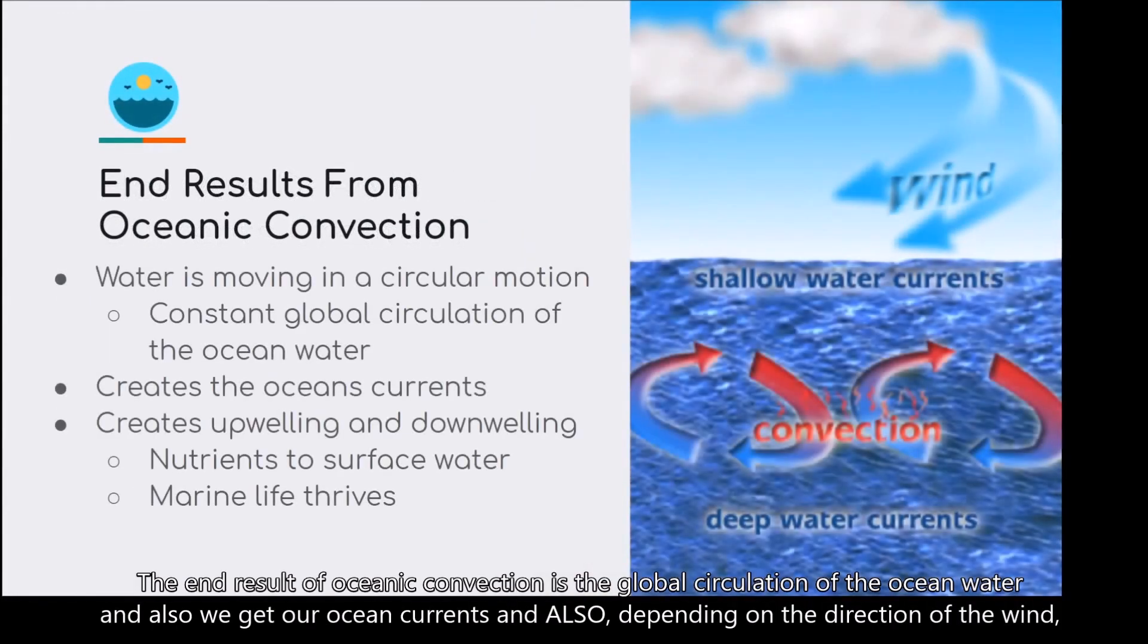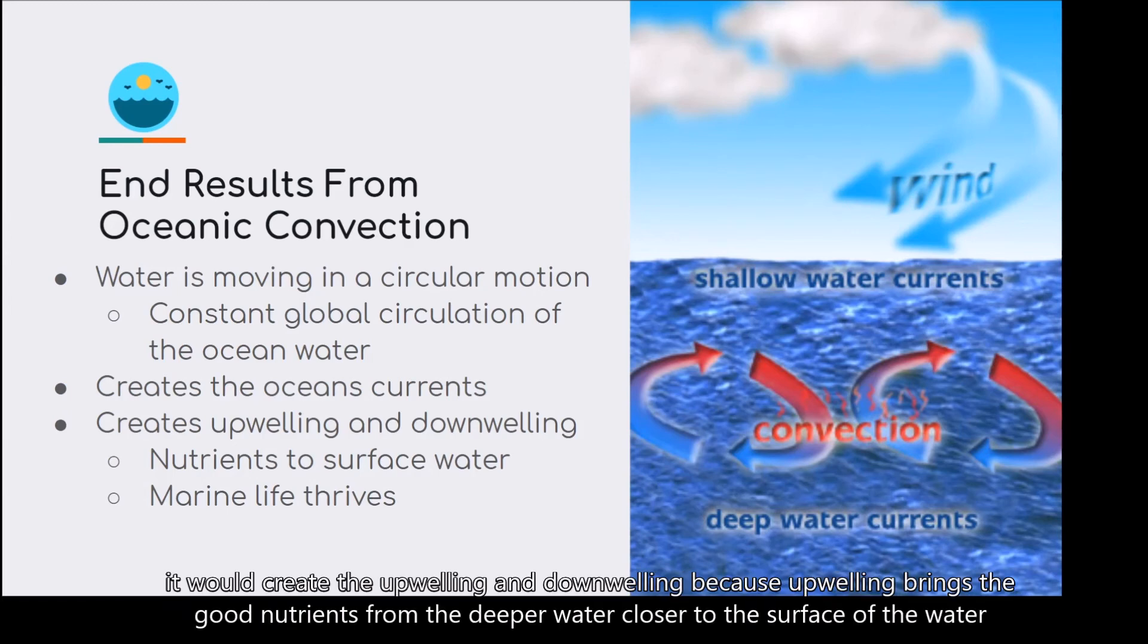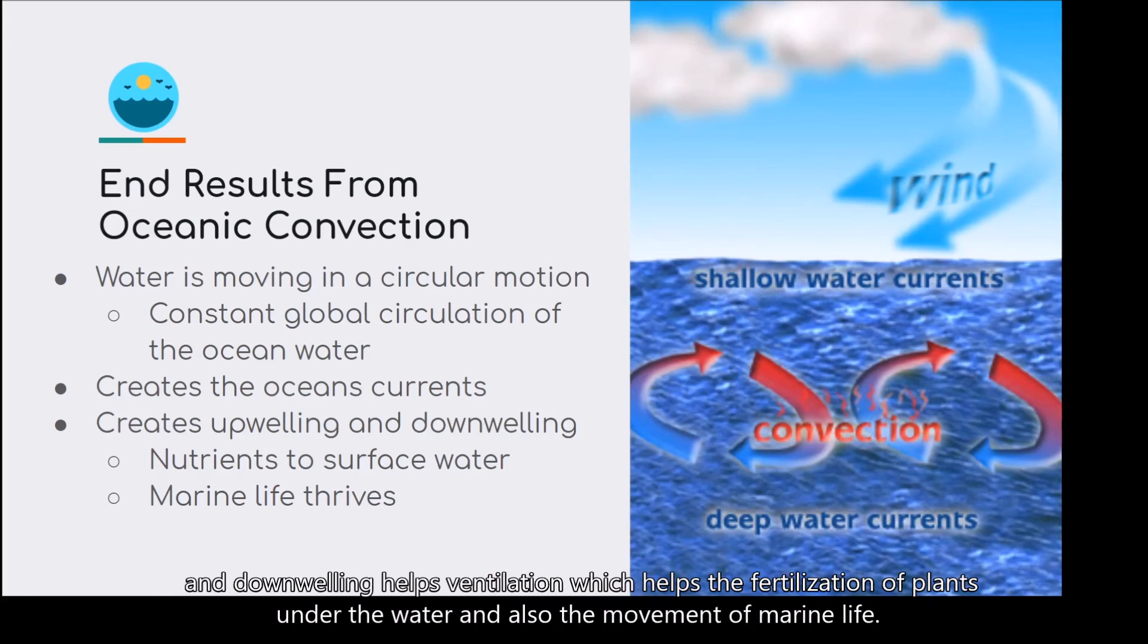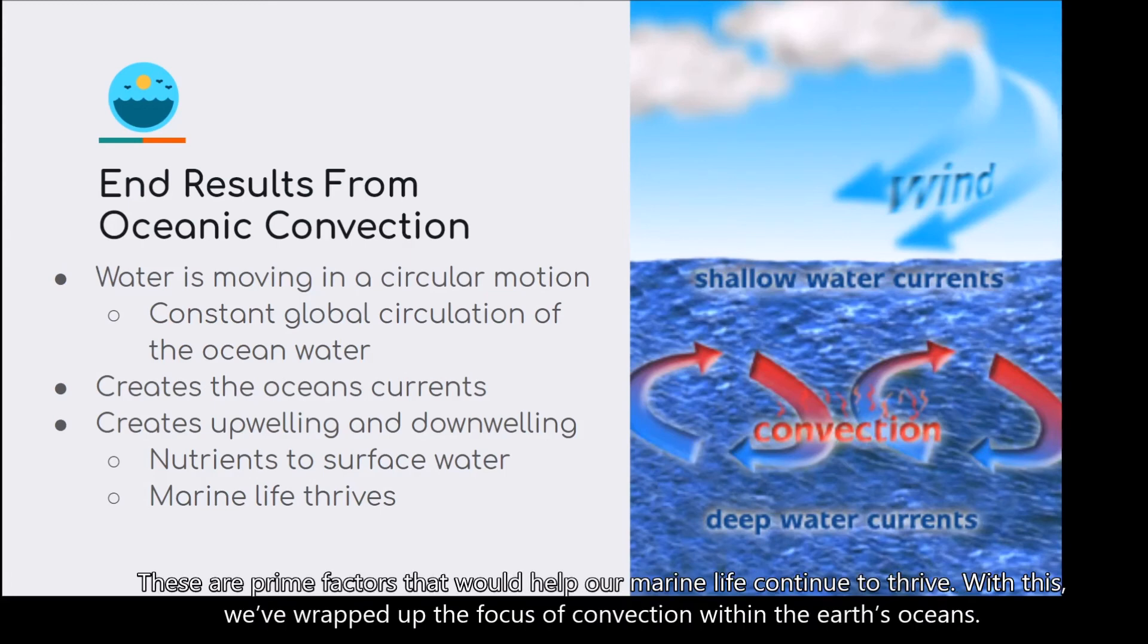The end result of the oceanic convection is a global circulation of the ocean water, and also we get our ocean currents. And also, depending on the direction of the wind, it would create an upwelling and downwelling, because upwelling brings the good nutrients from the deeper water closer to the surface of the water. And downwelling helps ventilation, which helps the fertilization of plants under the water, and also the movement of the marine life. These are the prime factors that will help our marine life continue to thrive.